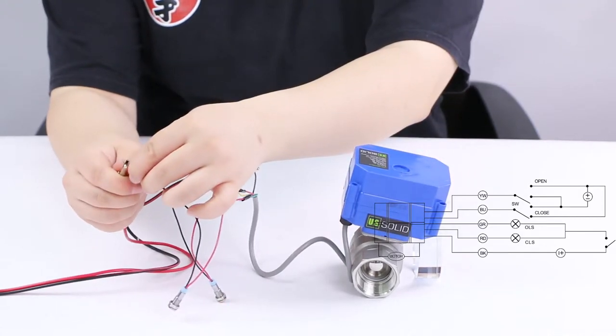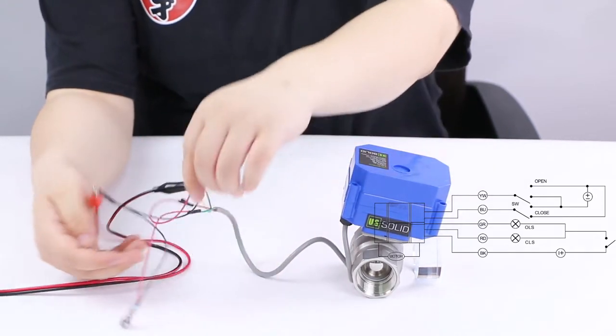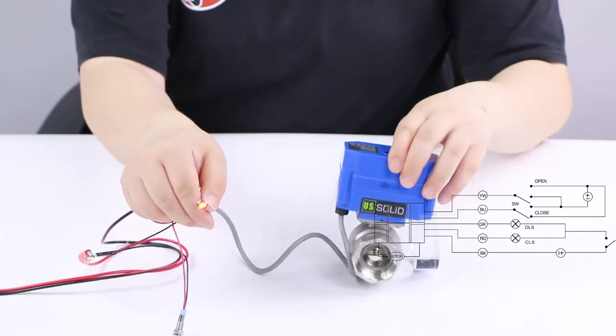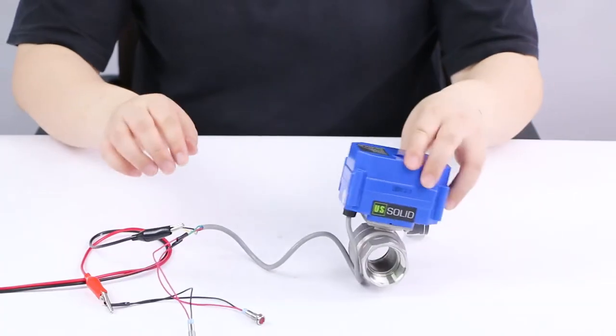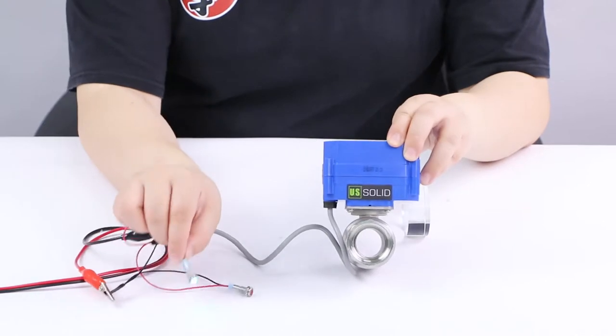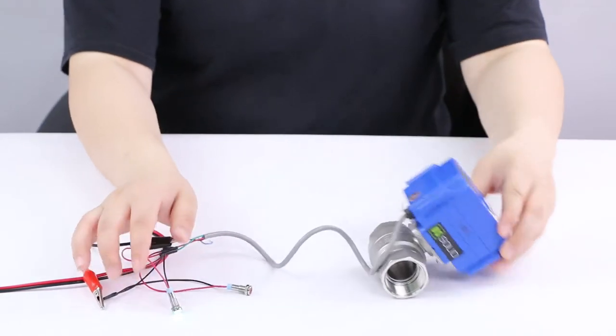Once fully closed, the red wire will output closed unlimited signal and the red light is on. The green wire could output open limited signal when the valve is fully open.